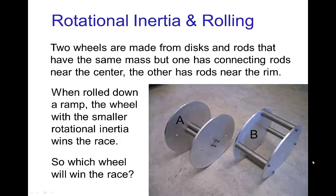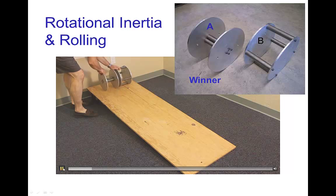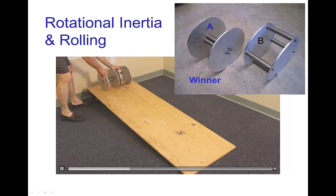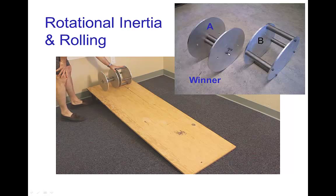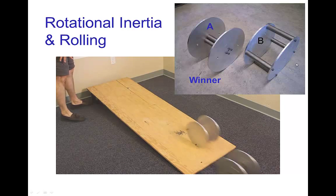So which do you think is going to win or is it going to be a tie? Go ahead and place your bets. Well, here's the answer. The smaller rotational inertia is the wheel that has the mass near the center, there you see it.